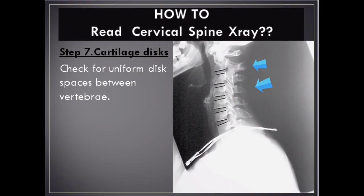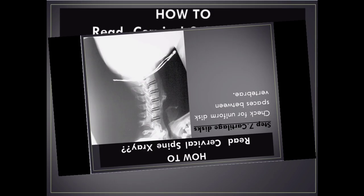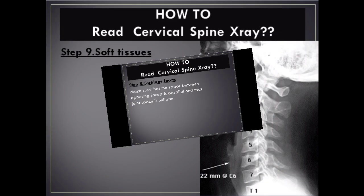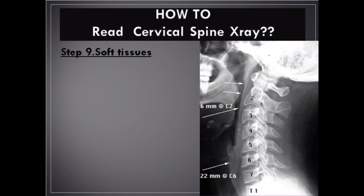Step 7 – Cartilage Discs: Check for uniform disc spaces between vertebrae. Step 8 – Cartilage Facets: Make sure that the space between opposing facets is parallel and that the joint space is uniform.